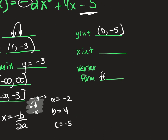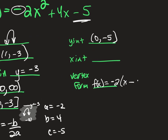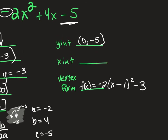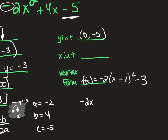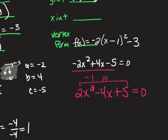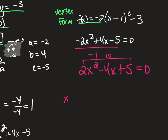Vertex form: f(x) = -2(x - 1)² - 3. To find x-intercepts, factor -2x² + 4x - 5 = 0. Divide out negative 1: 2x² - 4x + 5 = 0. We check: a times c is 2 times 5 = 10. Are there factors of 10 that multiply to 10 and add to -4? No — so this doesn't factor pretty. We need to use the quadratic formula.